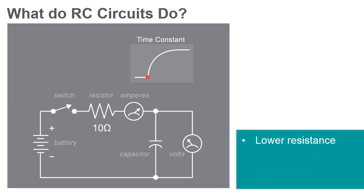With a lower resistance, the current in the circuit is increased, and the capacitor charges more quickly.